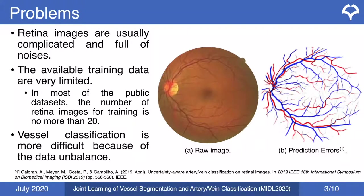Moreover, available datasets for training are very limited, with no more than 20 training images available in most public datasets. Also, classification is very difficult because of the data imbalance problem, as there are far more background pixels than artery and vein pixels.